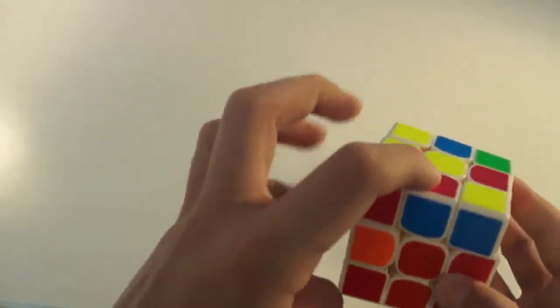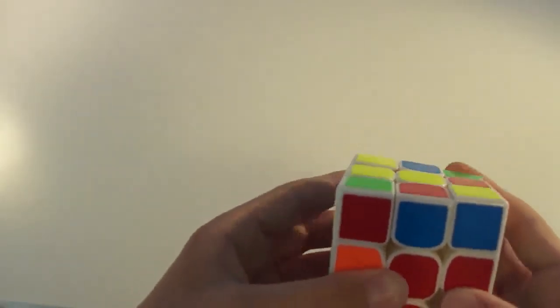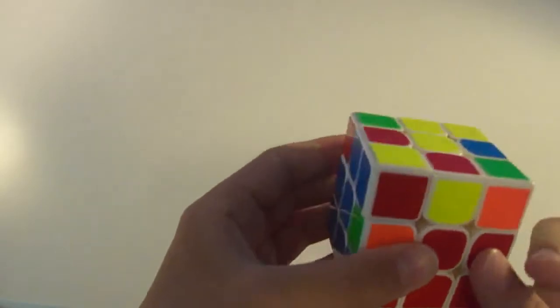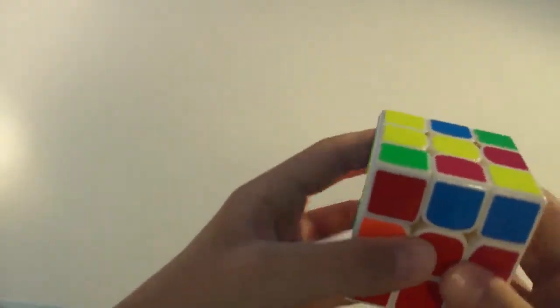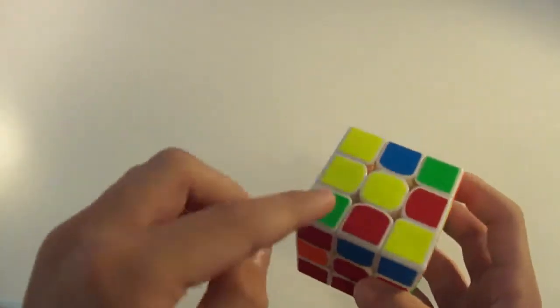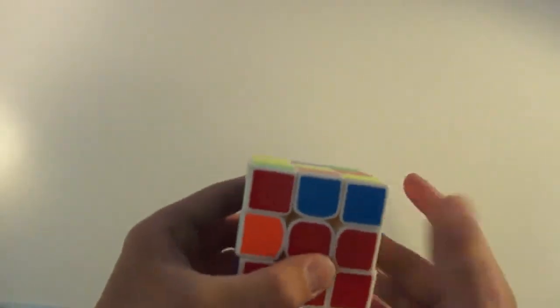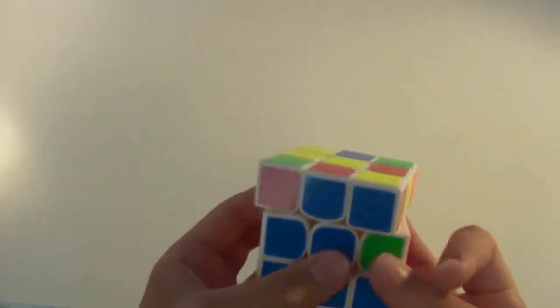So, I found blue and red. What you want to do with this is turn the top layer until the front color, not the color on top, which is red. The front color of this, in my case blue, matches its center.